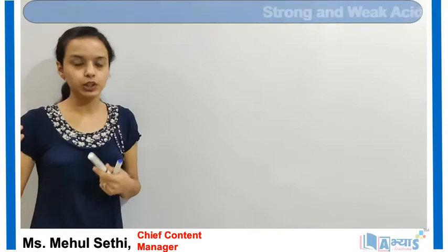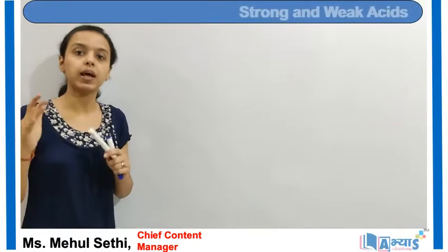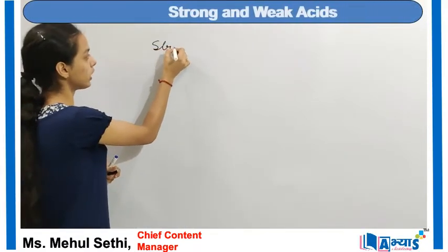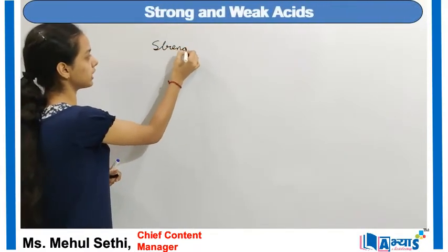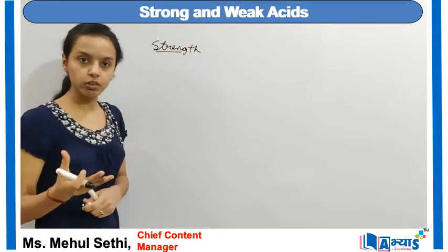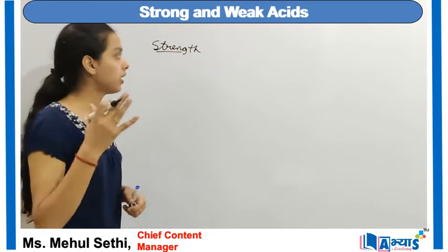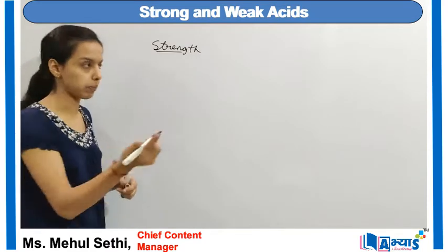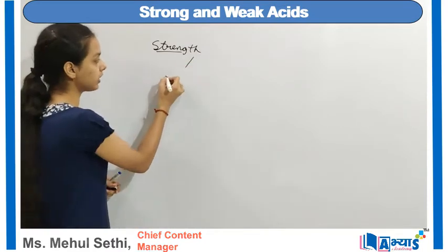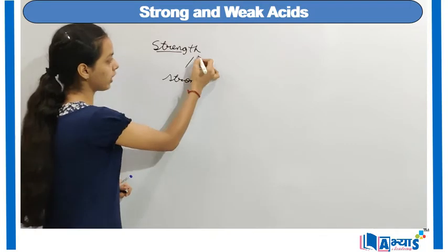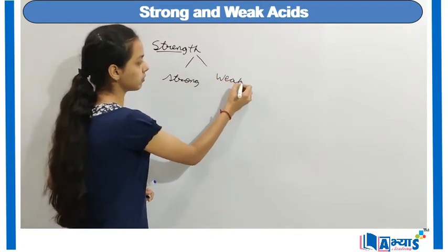Let us now discuss the classifications of acids, and this classification is based on the strength of the acid. On the basis of strength, acids are of two types: either it can be a strong acid or it can be a weak acid.